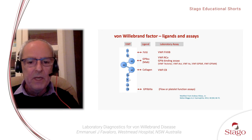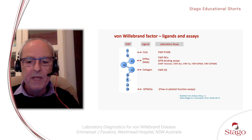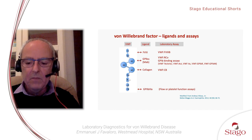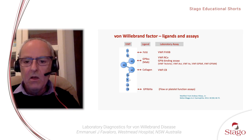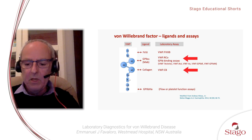Then there's the A3 domain, which can bind to collagen, and we assess that binding using a collagen binding assay. There are also other domains, such as the C domains, which bind to platelets via glycoprotein IIb/IIIa — which we don't normally measure for von Willebrand factor in the laboratory, but can be measured using a flow or platelet function assay if required. I'm going to be focusing on the two main assays: the glycoprotein Ib binding assays and the collagen binding assays.